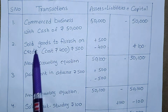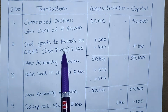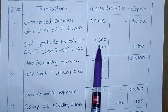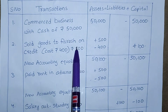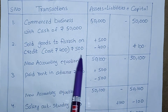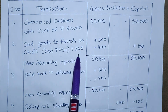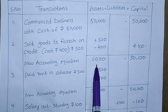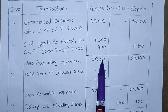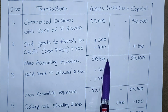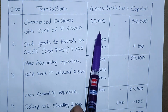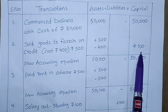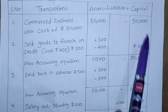Next, sold goods to Rakesh on credit. Cost is Rs. 400 and selling price is Rs. 500. The difference between 400 and 500 is 100 — write 100 under the capital column. Write 500 under assets (debtor Rakesh) and minus 400 (cost of goods). New accounting equation: 50,100. How we get this? 50,000 plus 500 minus 400 gives us 50,100. So 100 comes under capital.